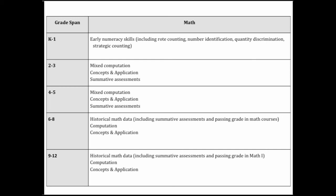Beginning in about sixth grade, teams may wish to begin examining historical math data through past universal screening performance and summative assessments to determine whether additional universal screening measures need to be administered. If large numbers of students demonstrate math deficits from these data sources, teams will likely wish to administer another universal screening measure, such as a mixed computation fluency or math concepts and applications assessment. These pieces of data together will allow school teams to intensify core instruction for all and provide supplemental intervention to those with the largest deficits.